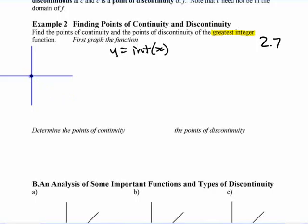So greatest integer in everything from 0 up to 1 is that. But as soon as you hit 1, the greatest integer is 1, right? And then as soon as you go to the right of 1, it's there until you get to 2, and then it's like that. That kind of discontinuity is called a jump discontinuity. It jumps from one value to another.